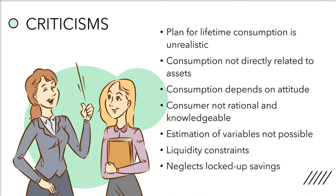because the consumer concentrates more on the present rather than on the future which is uncertain. Consumption is also not directly related to assets. The life cycle hypothesis presupposes that consumption is directly related to the assets of an individual, and as assets increase, his consumption increases and vice versa. This is also unwarranted because an individual may reduce his consumption to have larger assets.